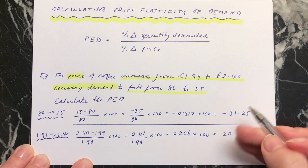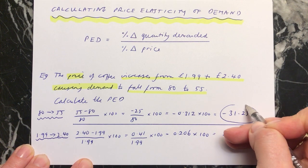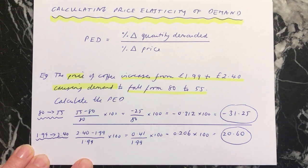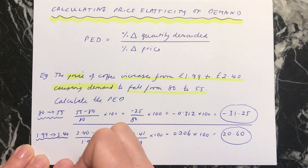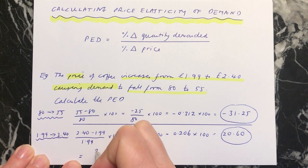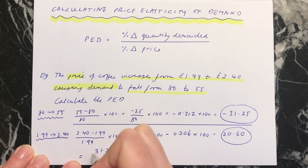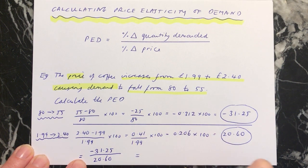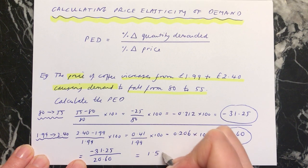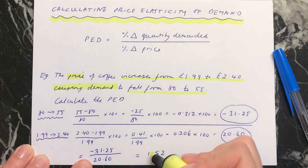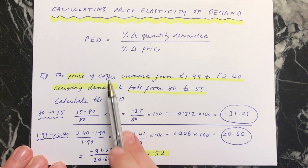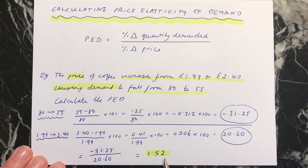So we know the figure for our top line is −31.25, and our bottom line is 20.60. For our whole calculation, we do −31.25 divided by 20.60. That gives us our final answer, which is 1.52. You just leave the number like that. So our price elasticity of demand for the coffee, based on this information, is 1.52.